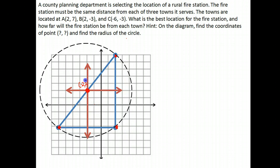That location is the point (-2,2). That would be the best place to locate the fire station because it's in the center, at an equal distance from every single town. The station should be located at the point (-2,2).